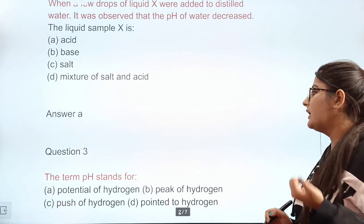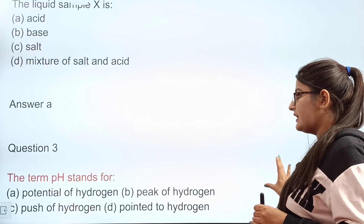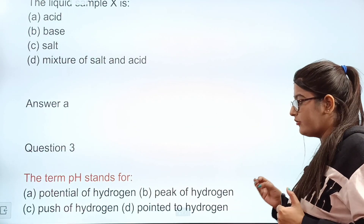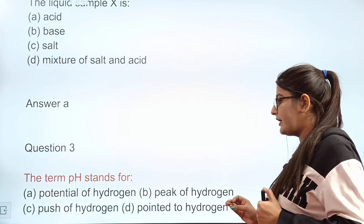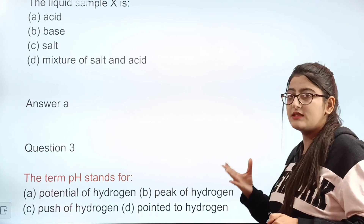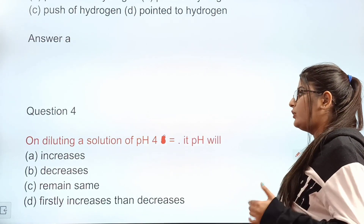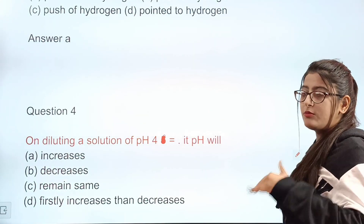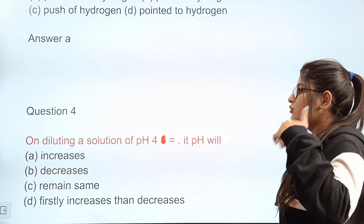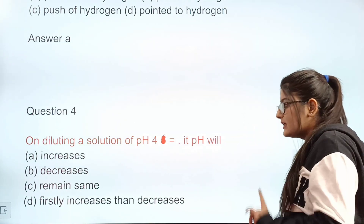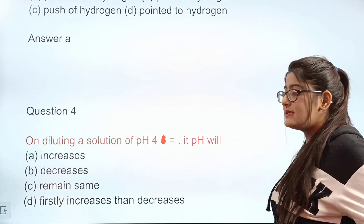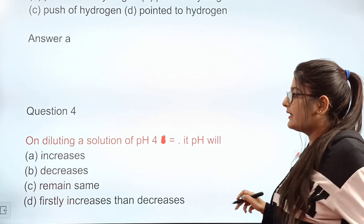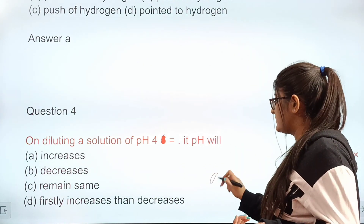Question 3: The term pH stands for — pH full form is 'Potential of Hydrogen.' Correct answer: A. Question 4: On diluting a solution of pH 4, the pH will increase, decrease, or remain the same? Correct answer: A — it will increase.